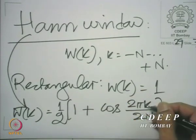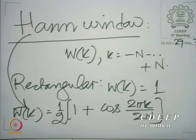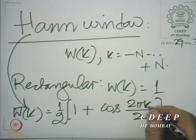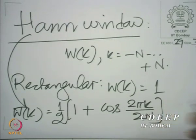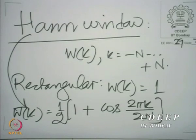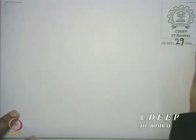At k equal to plus N and minus N, this becomes 0. What we are really doing is placing one whole cycle — when k goes over the entire interval from minus N to plus N, we run over a whole cycle of the cosine, taking the argument from minus π to plus π, putting that whole cycle of cosine on a constant. Therefore, it will always be non-negative but follow a cosinusoidal pattern. We can sketch the Hann window for our convenience.